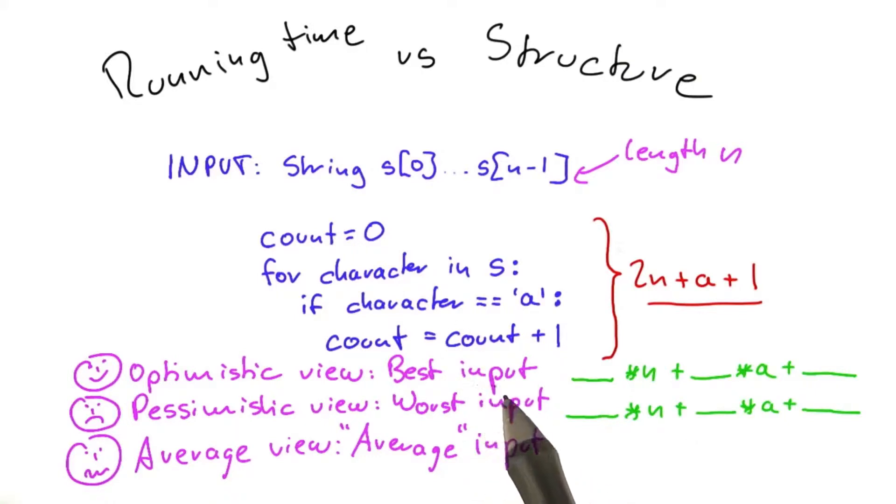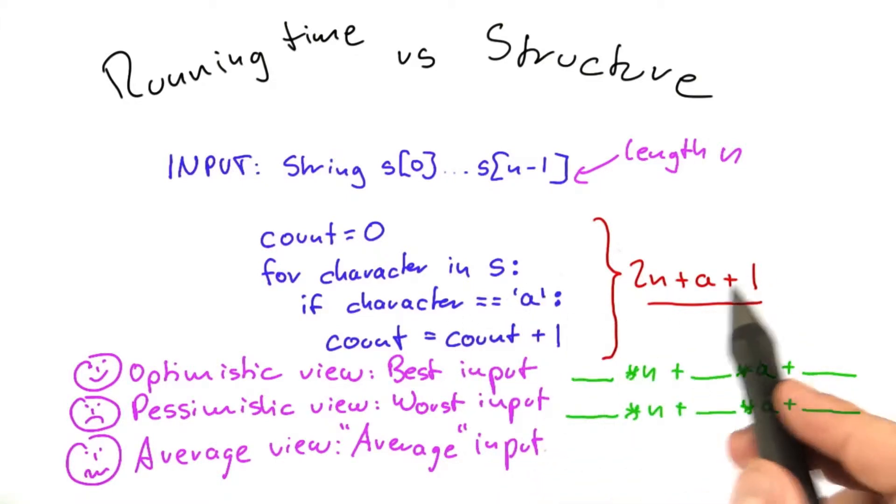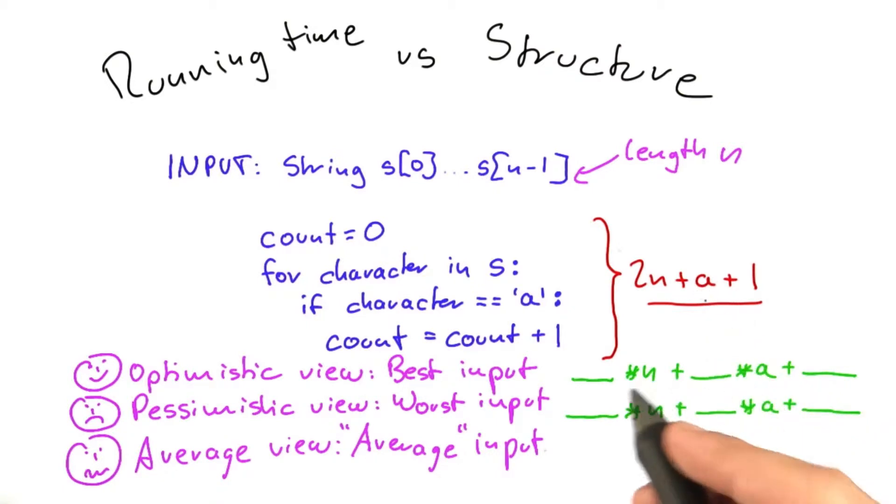What would be the best possible input for the algorithm? The best possible input for the algorithm would be if we give it a string that does not contain the letter a at all, because this will set a to 0. So the overall running time will be 2 times n plus 0 times a plus 1, which is this constant here.